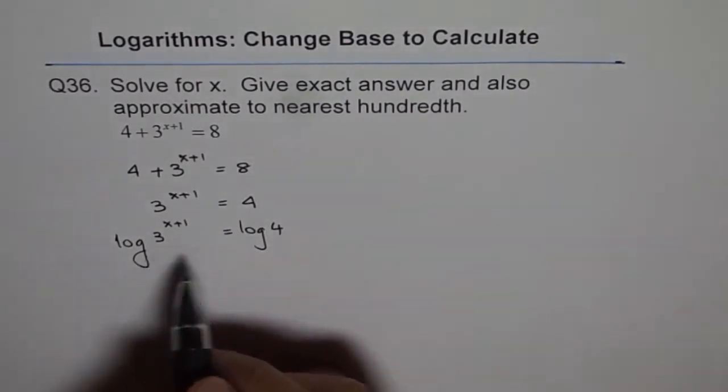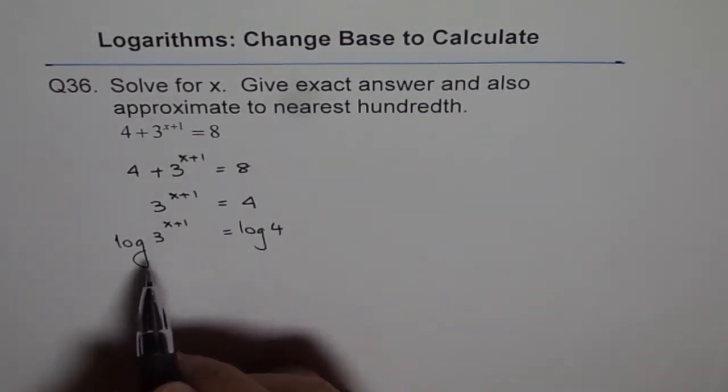So that will give us log of 3 to the power of x plus 1 equals to log of 4. When I don't write anything in the base, it is assumed to be base 10.